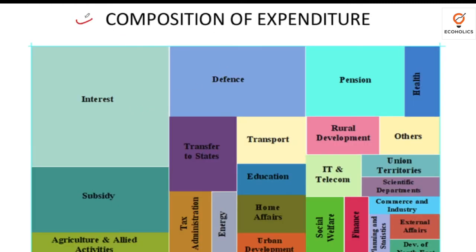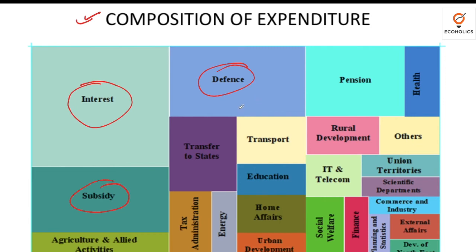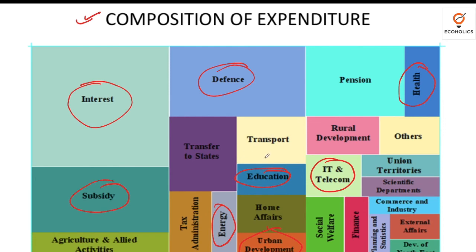In the composition of expenditure, the biggest block is interest payments — the largest amount goes just to paying interest. Defense and subsidies are almost equal at 8% and 6% respectively. Other expenditure items like education, energy, urban development, IT and telecom, and health are creating assets but their share is quite small — these need to be increased to create more assets.